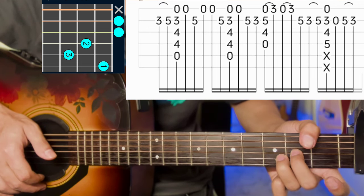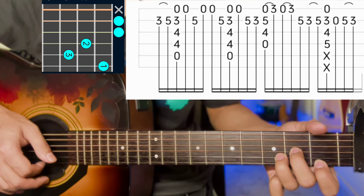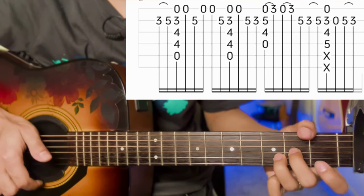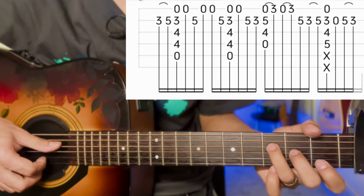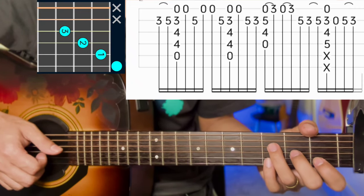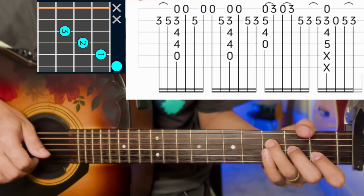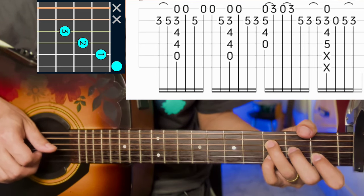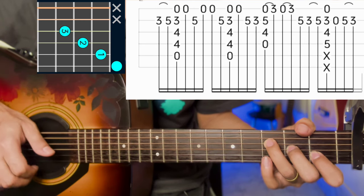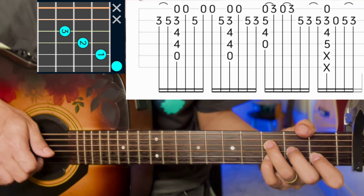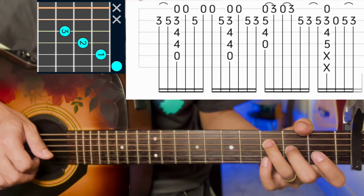First string open, hammer on third fret, second string. F triad chord: single strum on second string at 5. F triad single strum: second string 5, open, 5, 3, pull off.